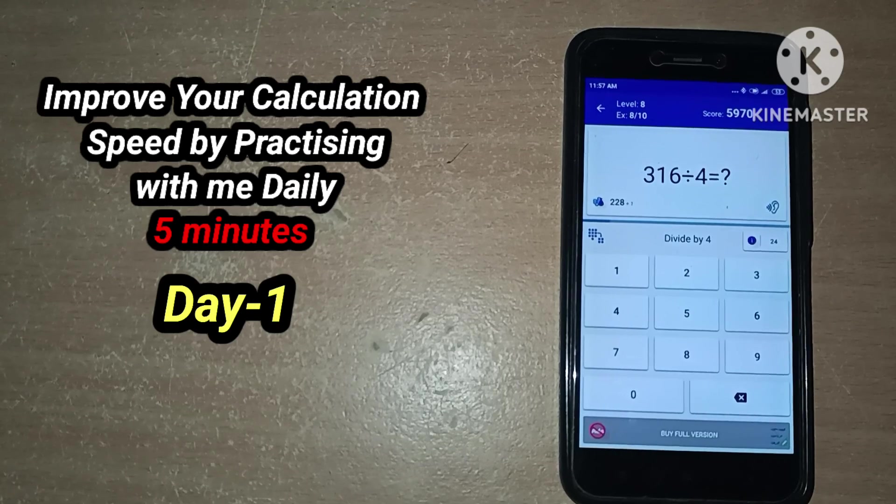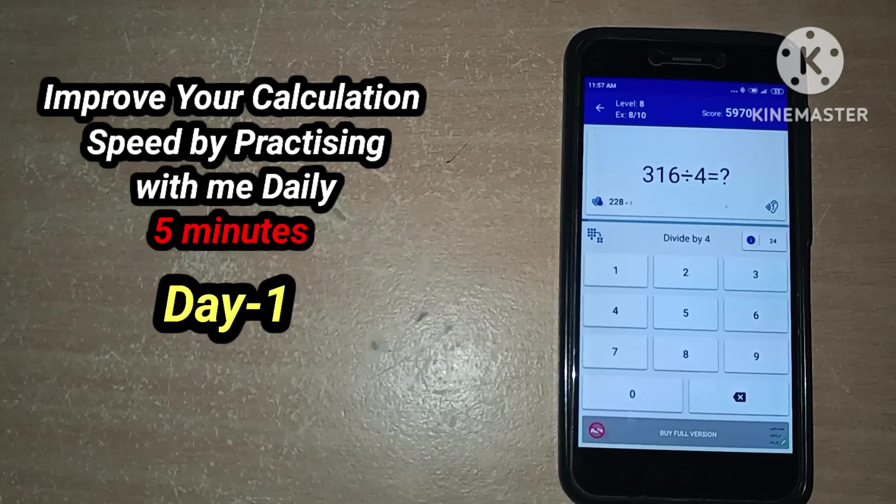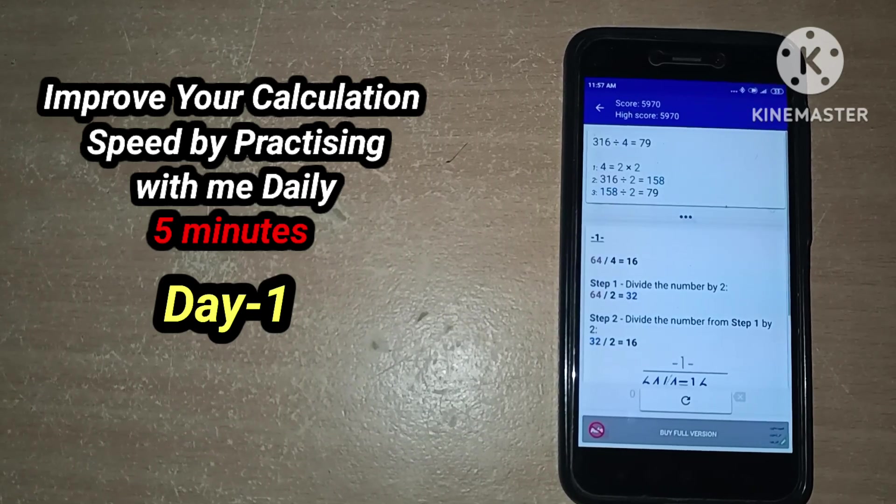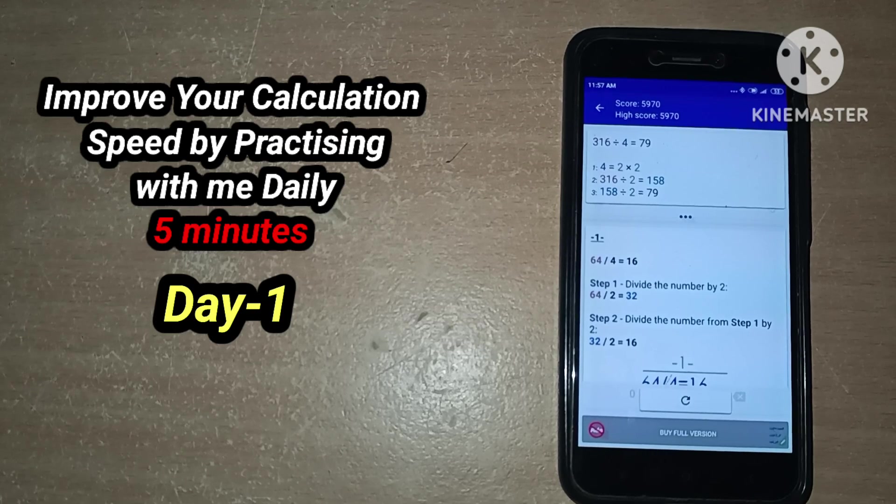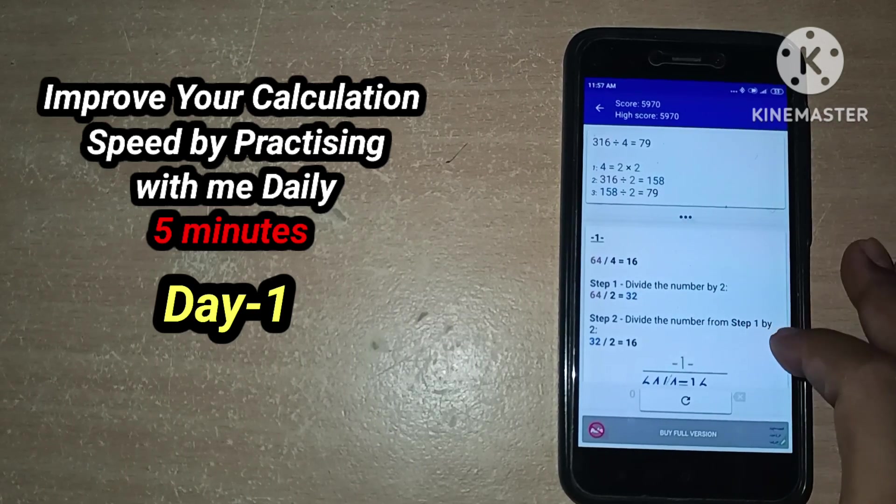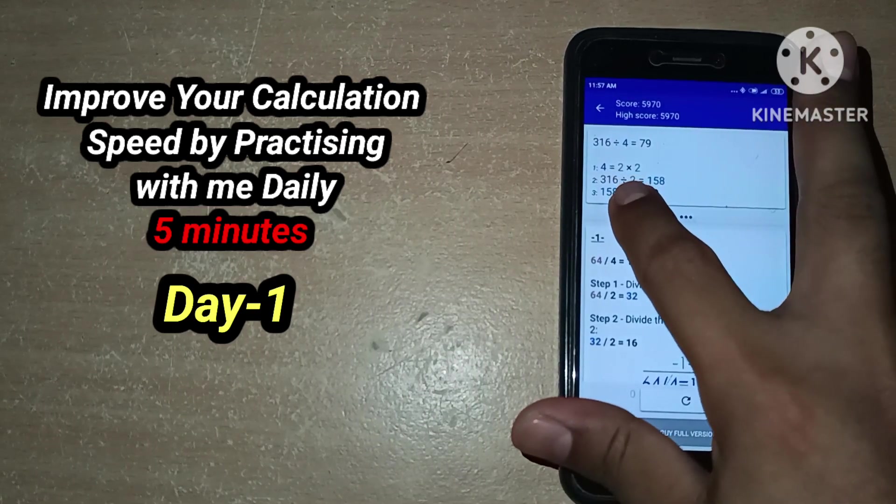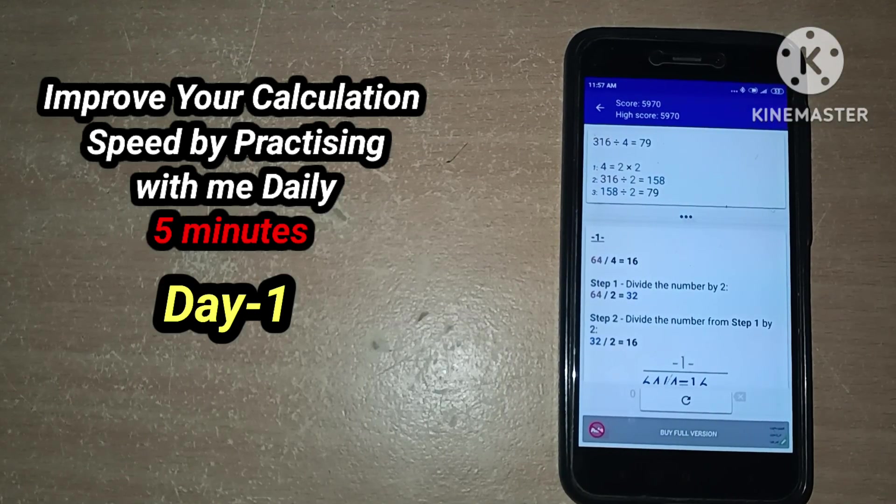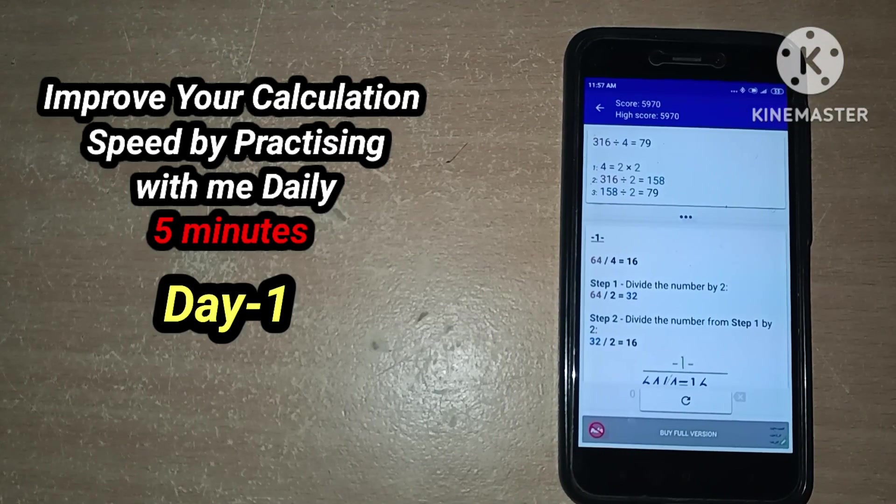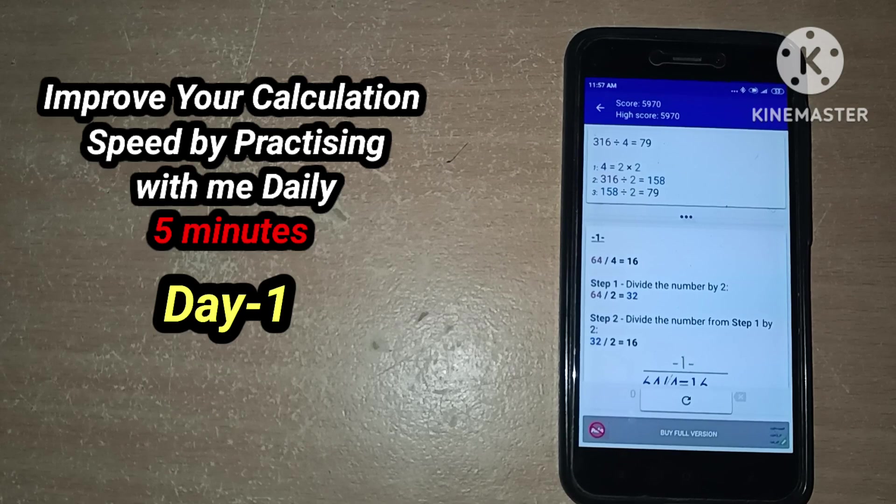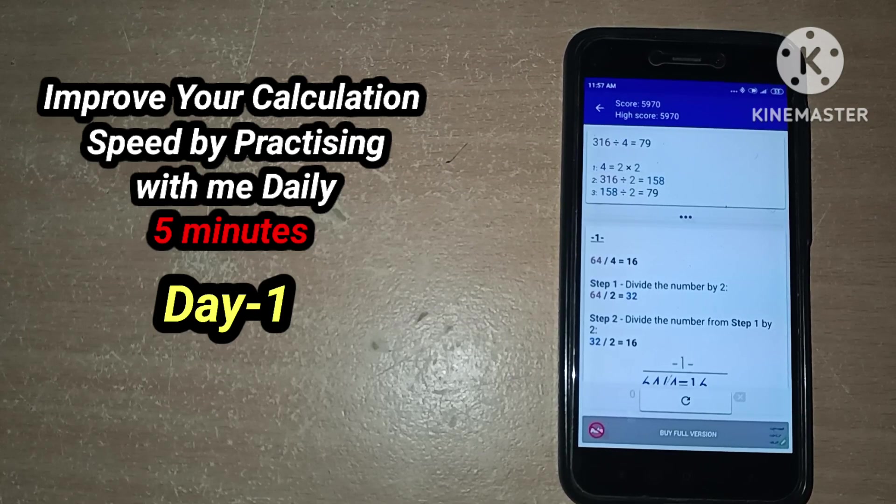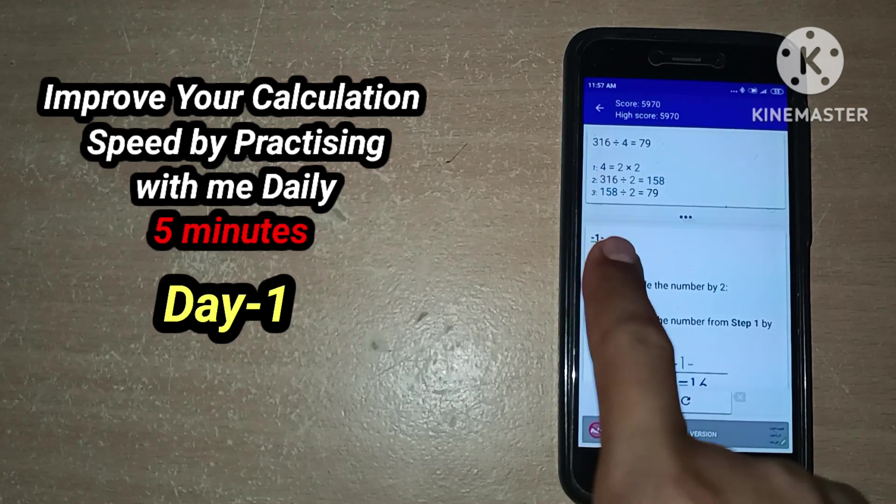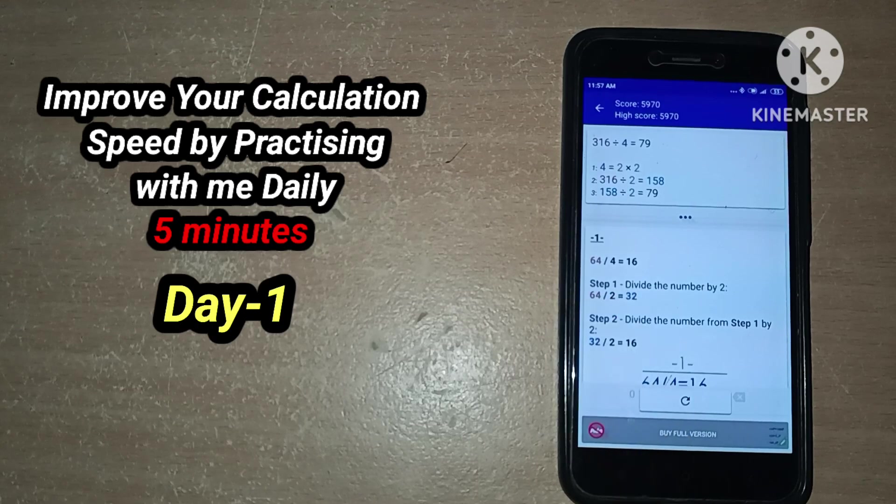Let's stop here. And here we see how to do this one. First we need to subtract with 2. So 316 divided by 2 means 1, 0, 1, 5, 8. 158 divided by 2, which we get 79. So we need to do 2 times dividing with 2. This is the shortcut for this one.